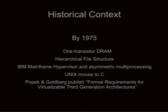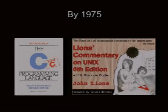I'll shoot through some historical context to help explain some of the newer technologies and why they're exciting. In the dark ages, there were mainframes and mechanical devices, and by 1975 we finally had familiar one-transistor RAM. We had the hierarchical file system, IBM mainframe precedents, and asymmetrical multiprocessing — symmetrical did not come for probably another decade. Unix moved to C, and in '72 Popeck and Goldberg established the formal requirements for virtualizable third-generation architectures.